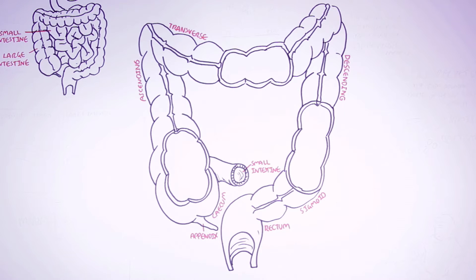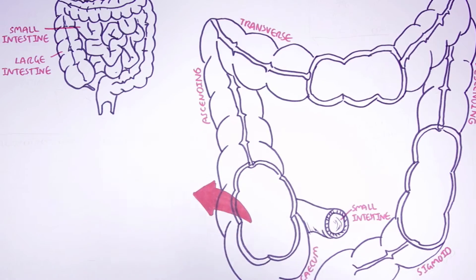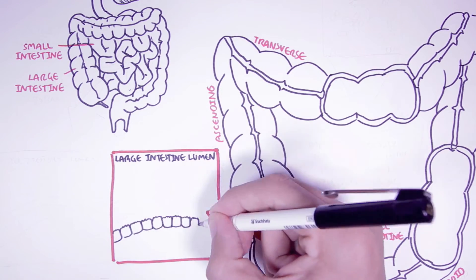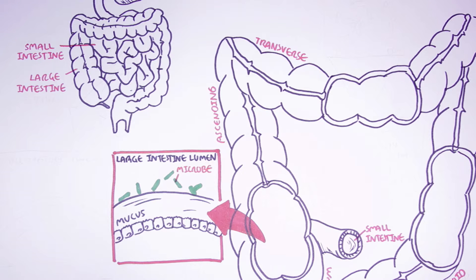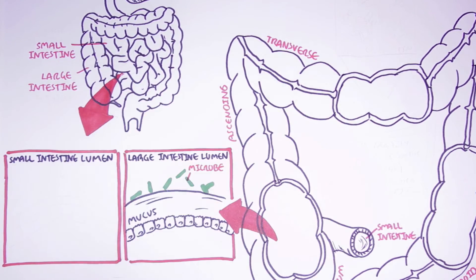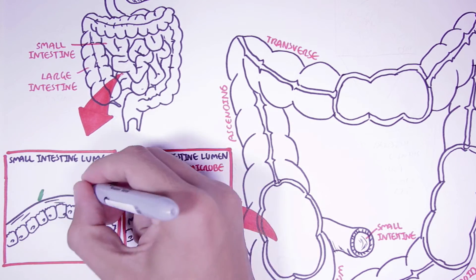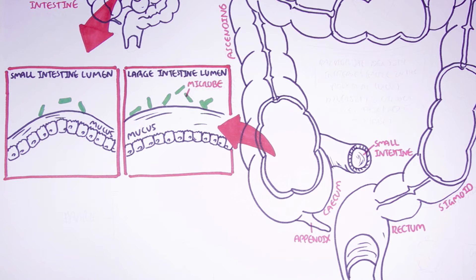We also have the appendix that joins with the cecum. You might be thinking: if bacteria are inside our body, wouldn't it initiate some form of immune response? Well, that is true, but the digestive tract is special in that it contains mucus. The lumen of the large intestine and the colon cells are separated by mucus, which acts as a barrier between the microbial community and the human cells. Interestingly, the small intestine and the microbes are only separated by a thin layer of mucus, much thinner compared to the mucus layer of the large intestine.